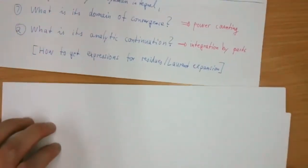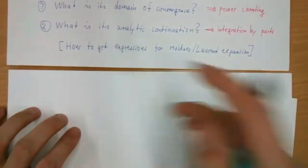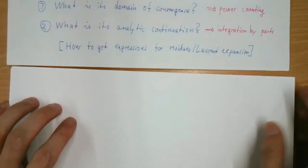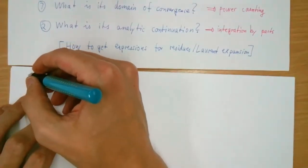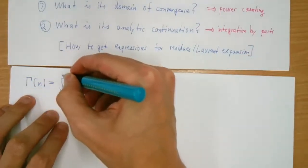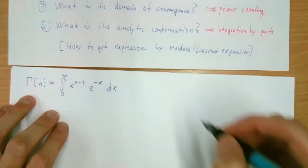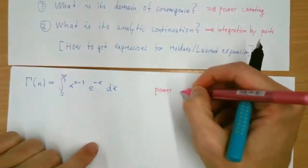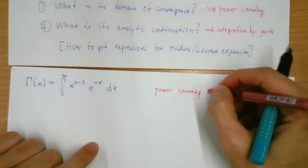If there are any questions, please just unmute and shout and we can discuss it. Let me do a toy example of analytic continuation. Let's look at the gamma function again: the integral from zero to infinity of x to the n minus one times e to the minus x dx. Where does this converge? By power counting, the problem comes when x gets small.